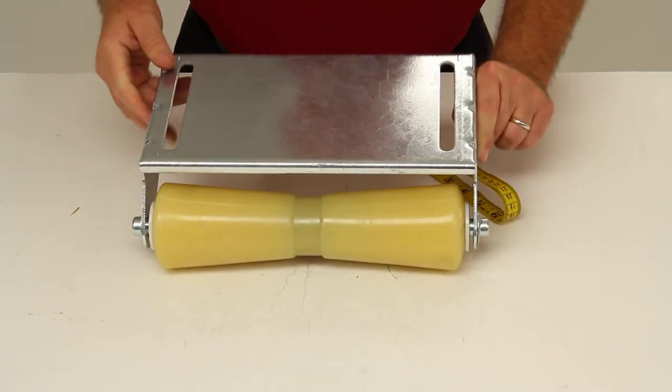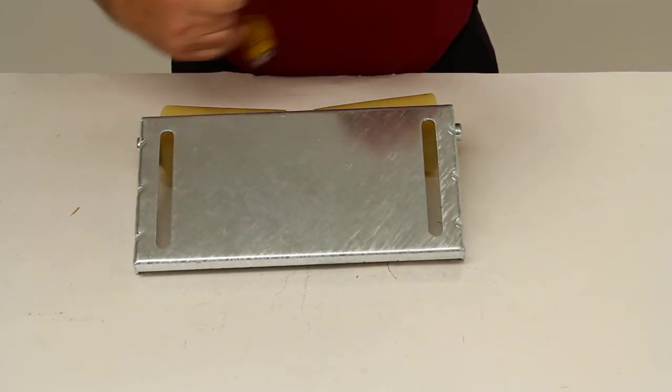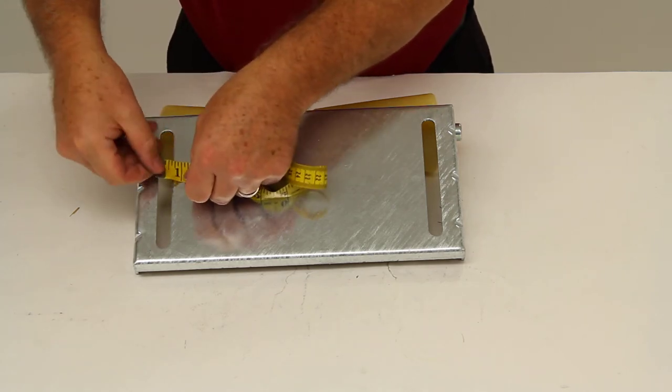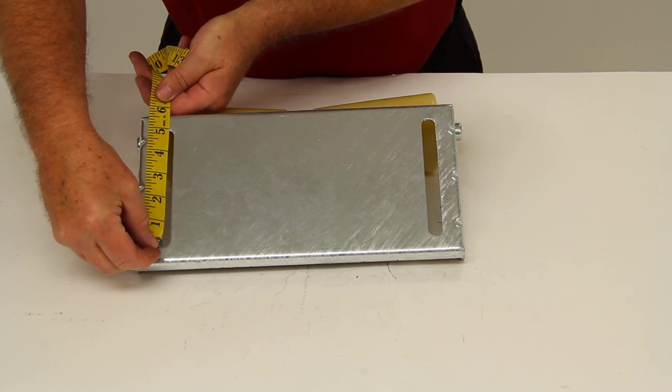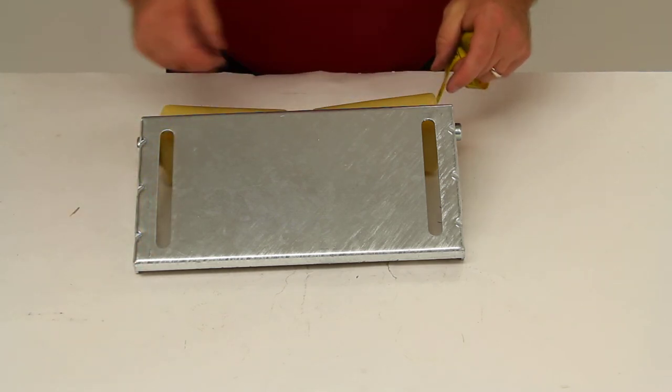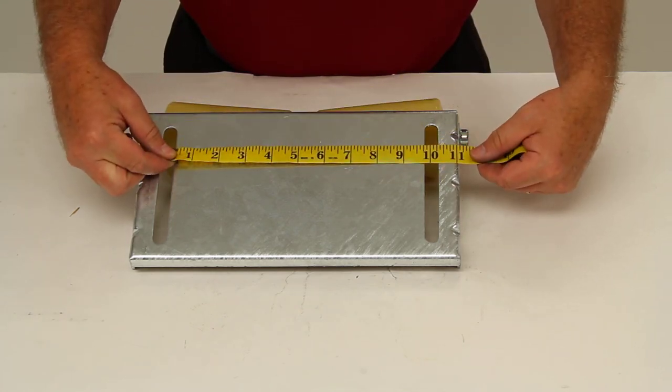Now on the mounting holes, the dimensions of the slots are going to be half-inch wide and 5 inches long. The spacing between the slots, center to center, is going to be 10 inches.